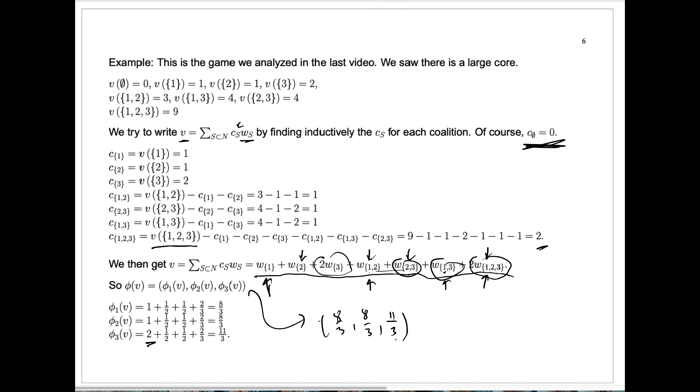Now we might ask, is this Shapley value in the core? In other words, is this an imputation which is stable under all coalitions? The answer, one can compute here, is in this case yes. Certainly it's individually rational. Each player receives more than the value they could get entirely alone. 8 thirds is bigger than the 1, 8 thirds is bigger than this 2 here. I'm sorry, the second one, 8 thirds is bigger than that 1, and the 11 thirds is bigger than that 2.